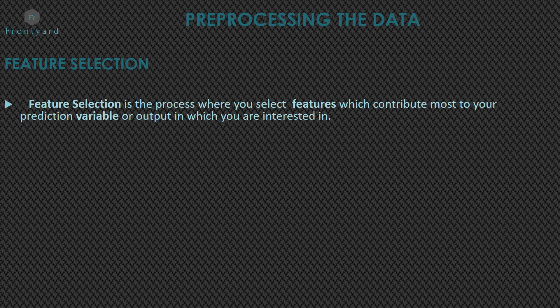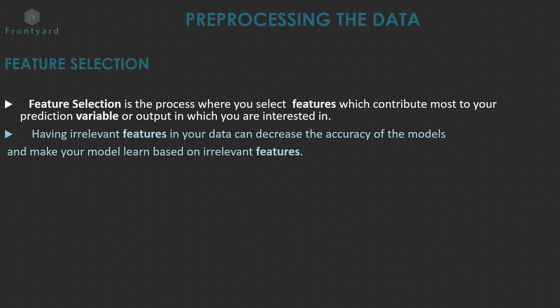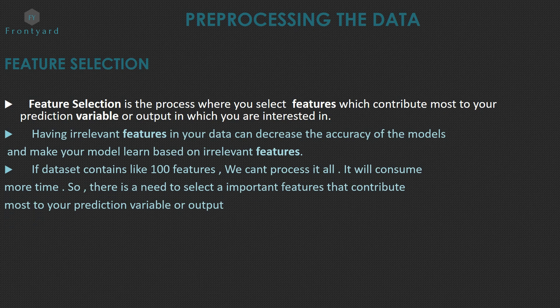Let's see the second method, feature selection in preprocessing the data. Feature selection is the process where you select features which contribute most to your prediction variable or output in which you are interested in. Having irrelevant features in your data can decrease the accuracy of the models and make your model learn based on irrelevant features. If the dataset contains unrelated features, we can't process it all. It will consume more time. So there is a need to select important features that contribute most to your prediction variable or output.